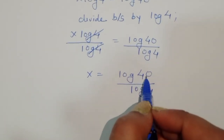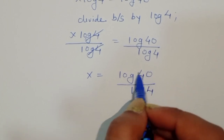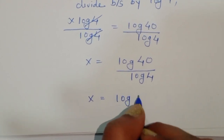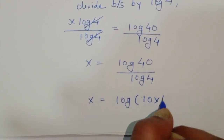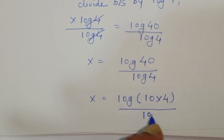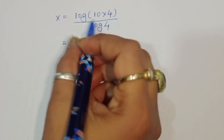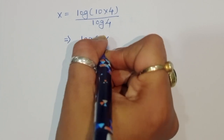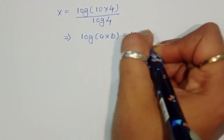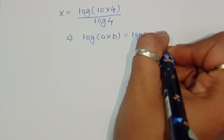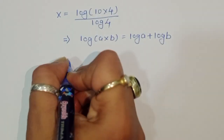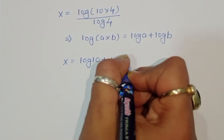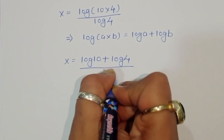Now for 40, we can write it in multiplication form: 40 equals 10 times 4. So x equals log of 10 times 4 divided by log of 4. We use the formula log of a times b equals log of a plus log of b. Using this formula, x equals log of 10 plus log of 4, all divided by log of 4.